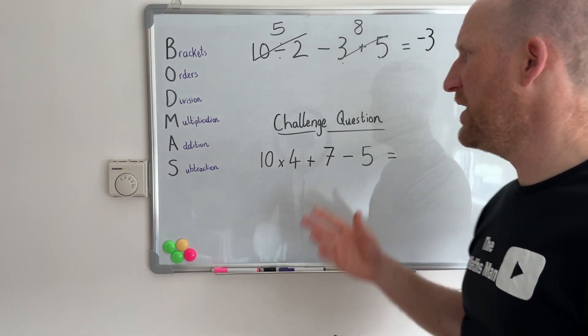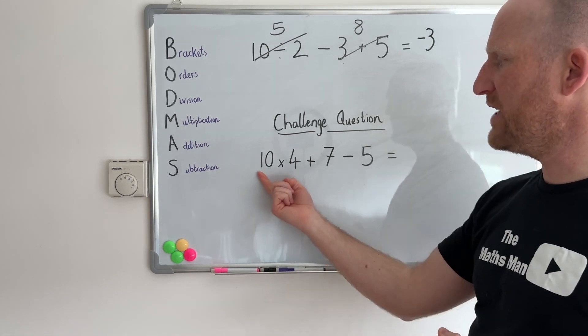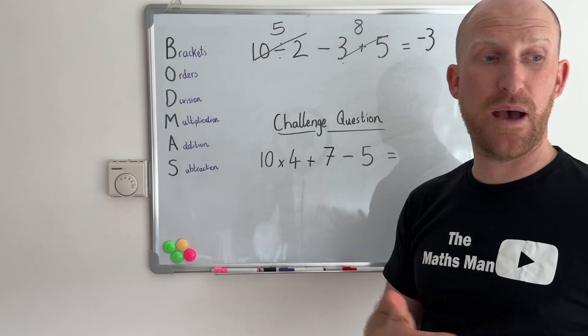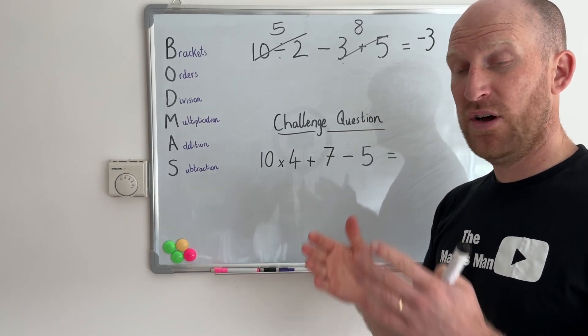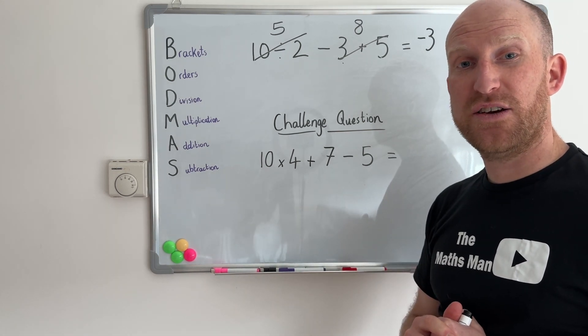So here's my challenge. Here's my final question for you to complete at home. So we have 10 multiplied by 4 plus 7 take away 5. So get a pen, get a piece of paper, figure out the answer and then when you've done write it in the comment section down below and I'll check your answer for you.